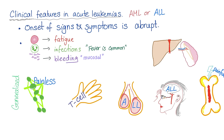Clinical features of acute leukemia, whether AML or ALL: the onset is abrupt — that's why they are acute — and the patient is younger. You have pancytopenia and generalized painless lymphadenopathy. These cells leave the bone marrow, go into the bloodstream and the lymphatic system, and reach lymph nodes which enlarge. When lymph nodes have cancer, it is usually painless. When they have infection, lymphadenopathy is usually painful.